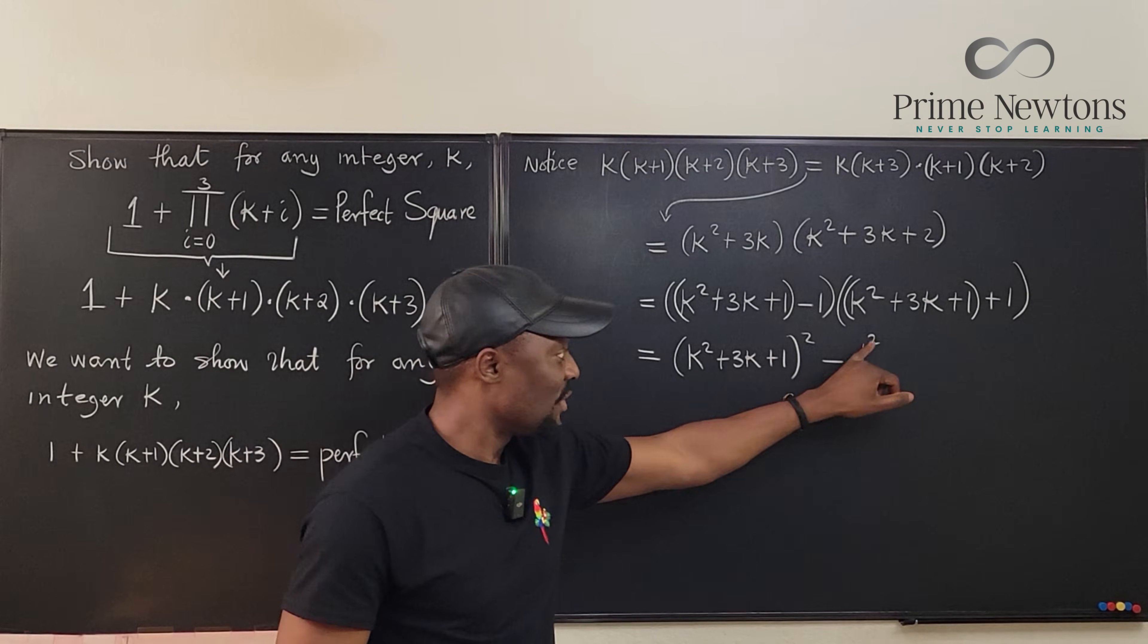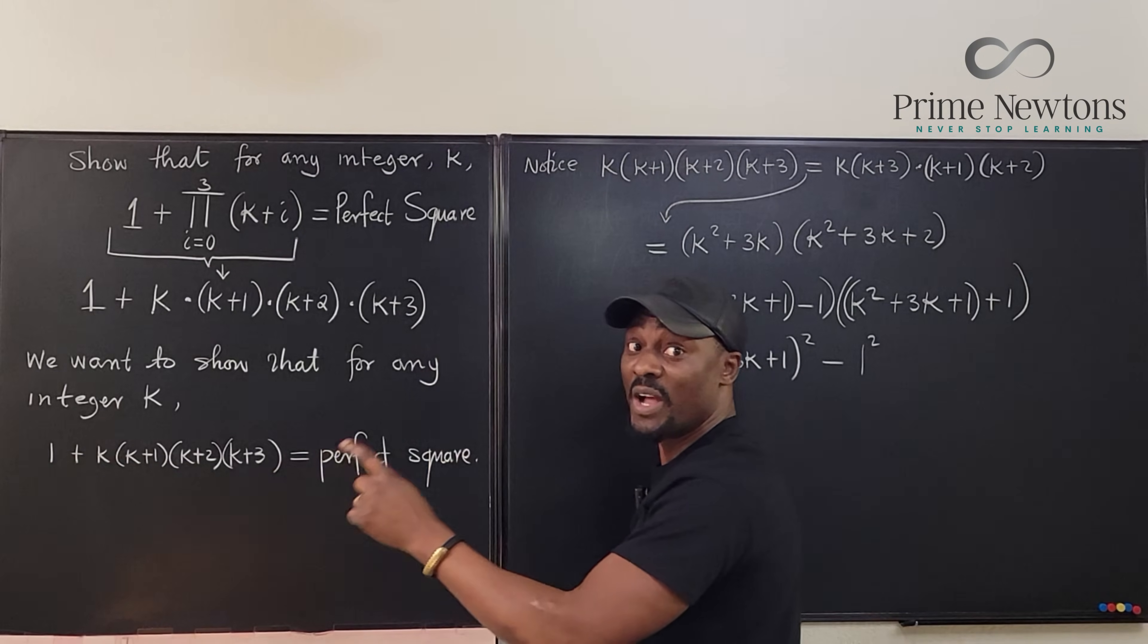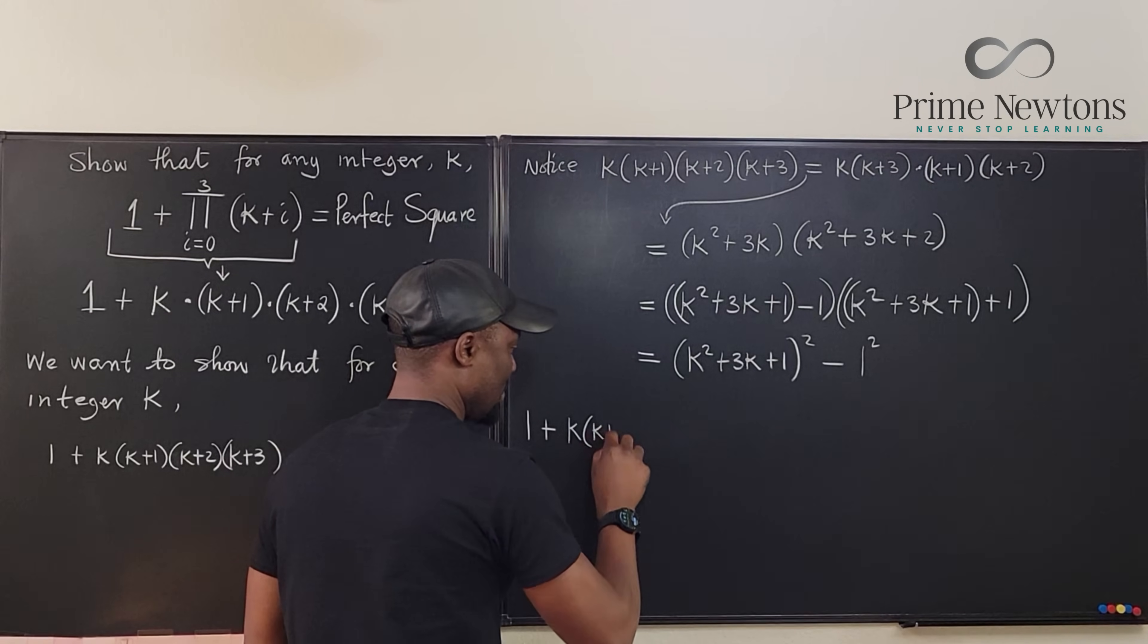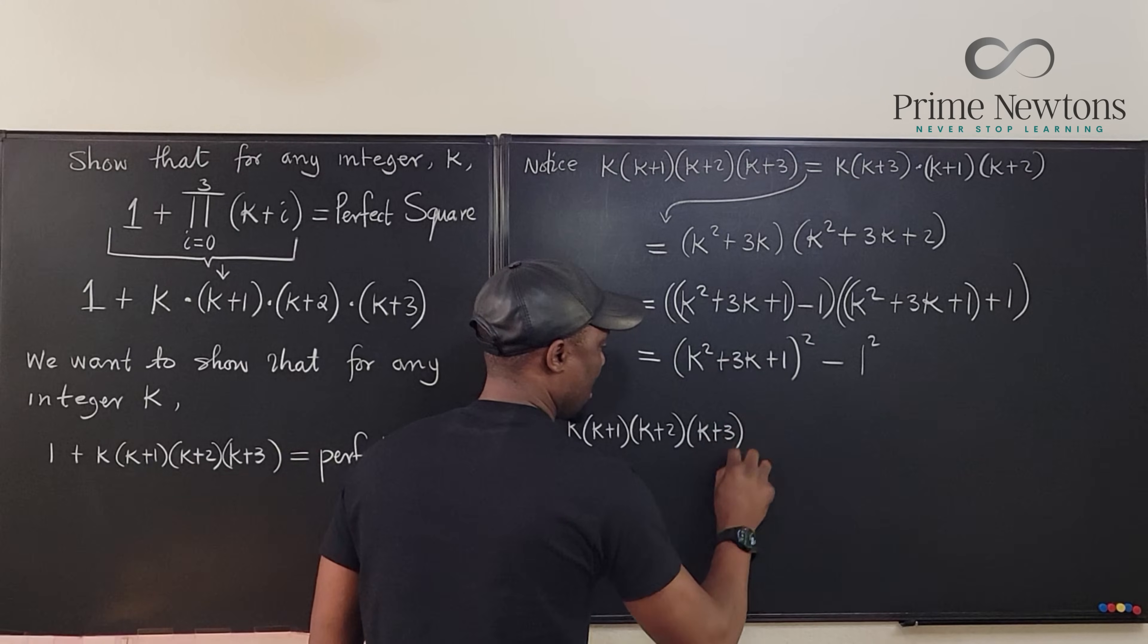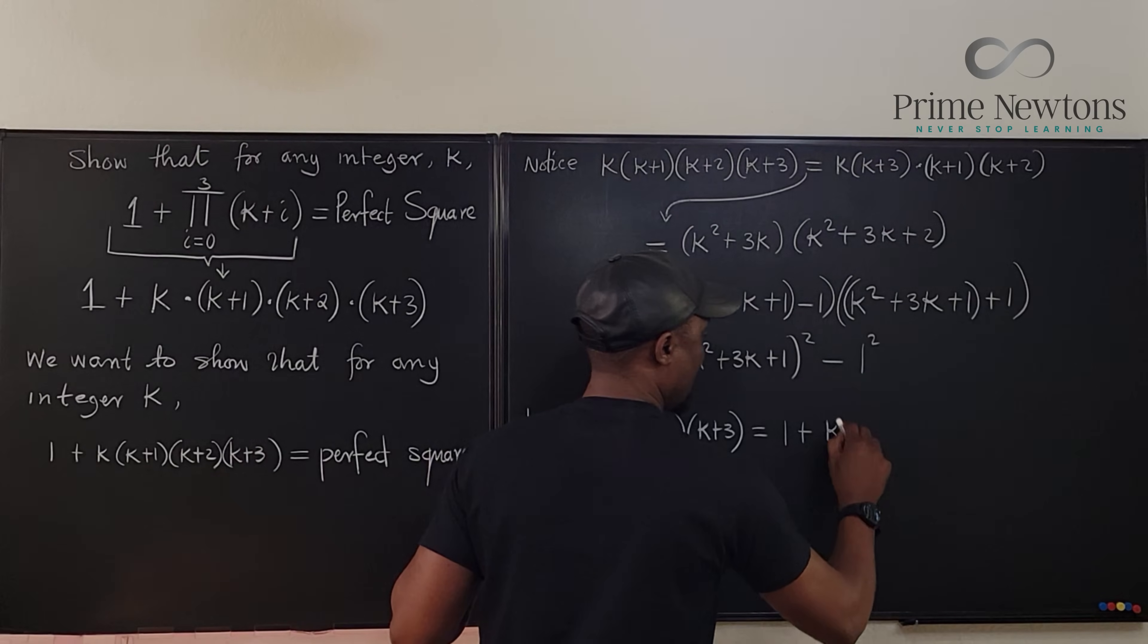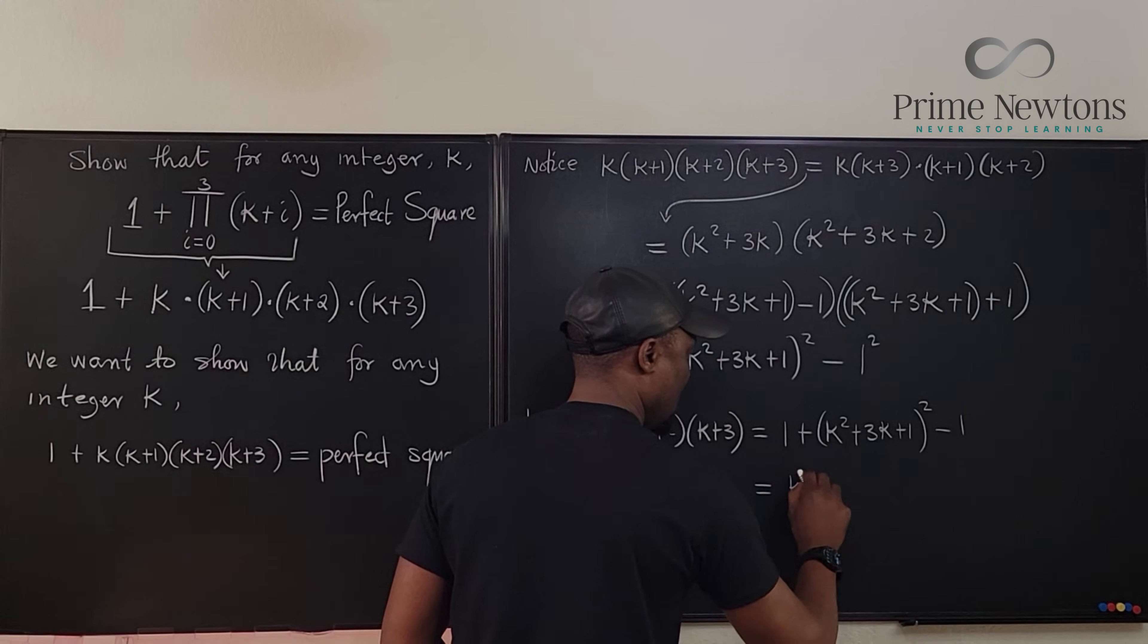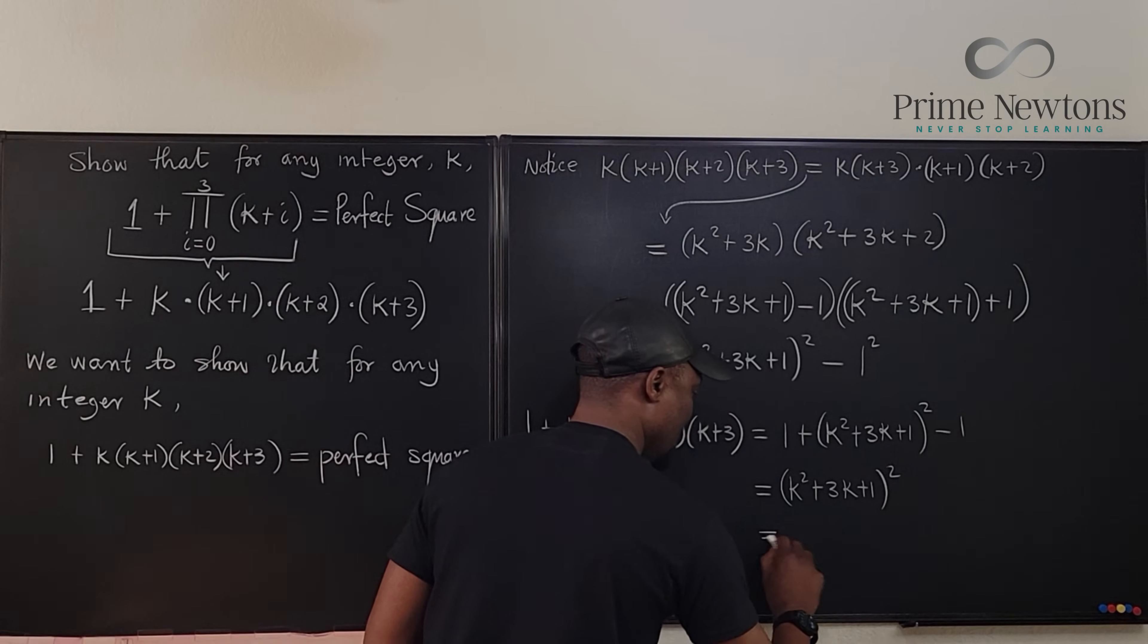Which is just minus one. If I go back to the original thing by bringing this one, I told you the one is supposed to save you. We can say one plus, what do we have here? One plus k into k plus one, k plus two, k plus three will be equal to one plus this square, k squared plus three k plus one squared minus one, which is equal to k squared plus three k plus one squared, which is a perfect square.